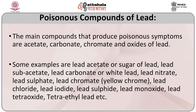The main poisonous compounds of lead include acetate, carbonate, chromate, and oxides of lead. Examples are lead acetate (sugar of lead), lead carbonate (white lead), lead nitrate, lead sulfate, lead chromate (yellow chromate), lead chloride, lead iodide, lead sulfite, lead monoxide, lead tetraoxide, and tetraethyl lead.